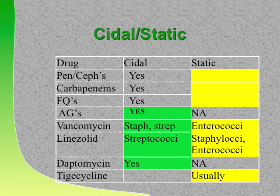In general, penicillins, cephalosporins, carbapenems, quinolones, and aminoglycosides are all cidal. Remember: vancomycin is cidal for Staph and Strep, but static for enterococcus. Zyvox (linezolid) is cidal for Strep, static for Staph and enterococcus. Daptomycin is cidal, and tigacycline is usually static—it's more of a tetracycline drug.